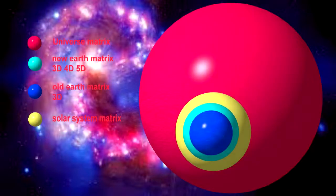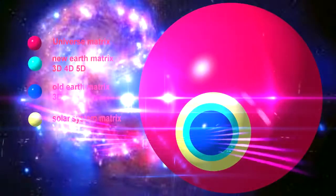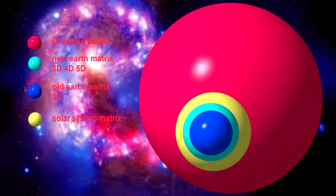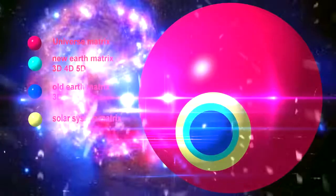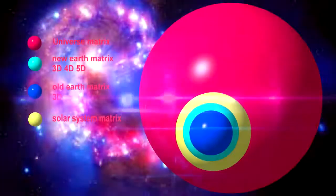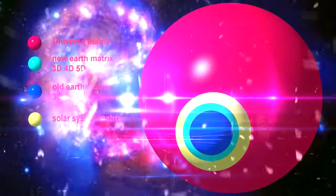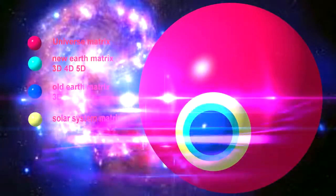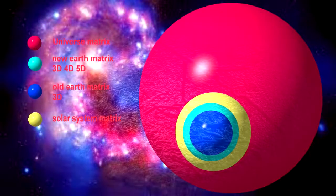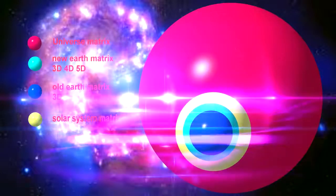We have many matrices we are connected into, and we start with the universal matrix. Our own Earth matrices intersect with many other matrices, including dimensional matrices. Even the new Earth reality has a matrix system, as each created reality must have an outline of what it is to be used for. Every reality has in this way a matrix system, as we create them for a certain purpose.